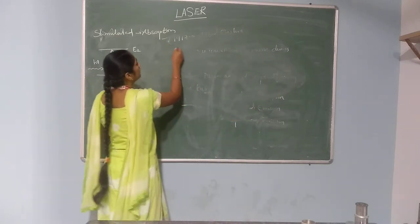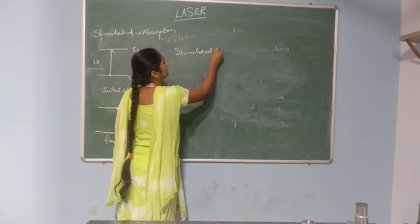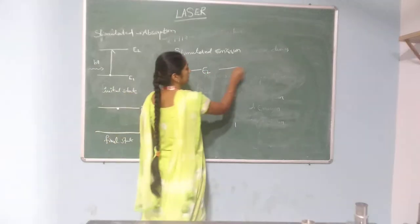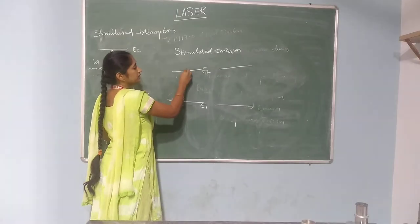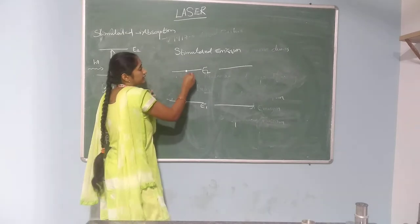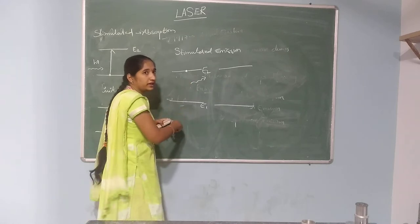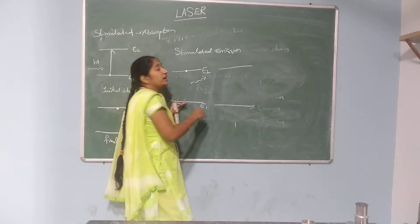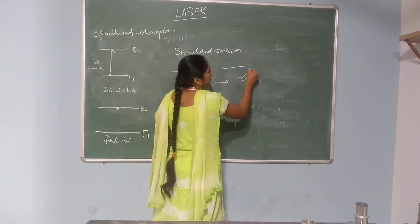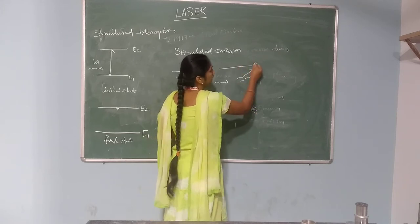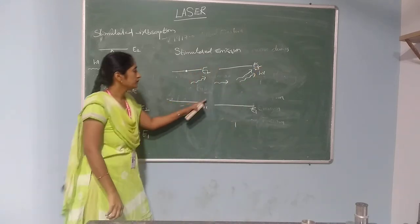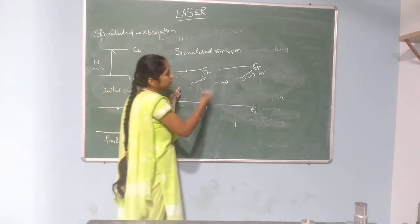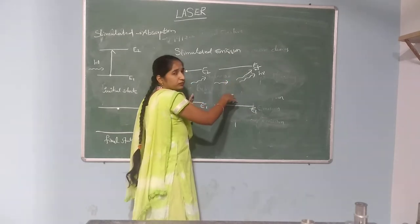In stimulated emission, the atoms are already in the excited state E2. When we give photon energy H-nu to the already-excited atoms, it stimulates the emission of another photon H-nu — both photons are coherent. So in stimulated emission, we get two coherent photons.